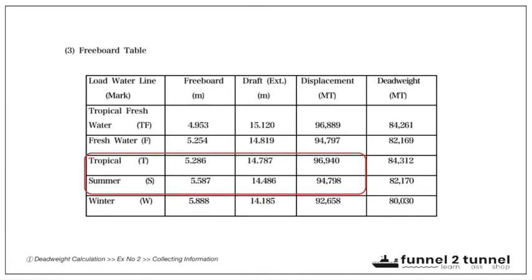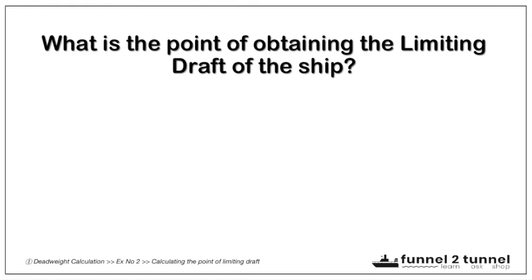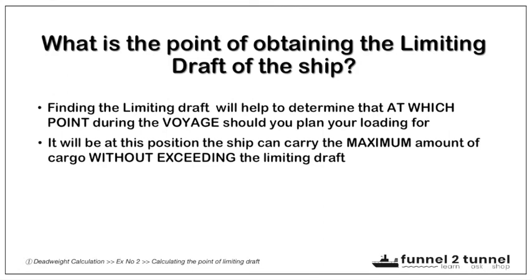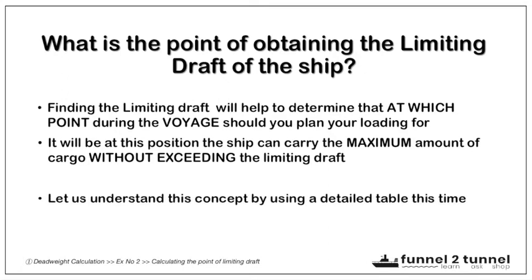From the trim and stability booklet: the tropical draft is 14.787m, tropical displacement is 96,940 tons; the summer displacement is 94,798 tons and summer draft is 14.486m. Finding the limiting draft helps determine at which point during the voyage to plan the loading — at that position the ship can carry the maximum cargo without exceeding the limiting draft. We will understand this concept using a detailed table.